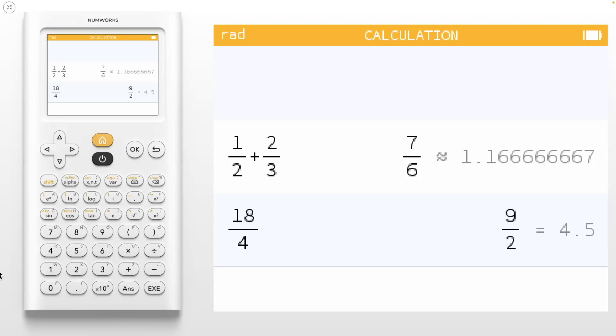This demonstrates two major features of the NumWorks graphing calculator. First, mathematical fidelity. We place an emphasis on making sure our tool accurately represents the mathematics. 7 sixths is approximately equal to 1.1667, but 9 divided by 2 is exactly equal to 4.5. Second, discoverability.